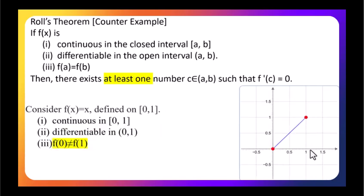Third example: consider f(x) equals x on the domain [0, 1]. In this case, the function is continuous and differentiable. But the third condition fails — f(0) is not equal to f(1). Therefore, Rolle's theorem does not apply in this case either.